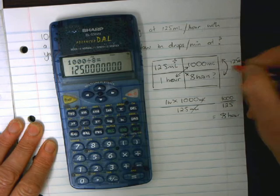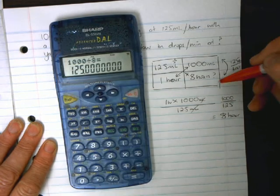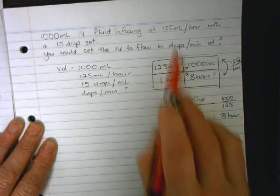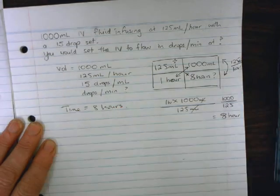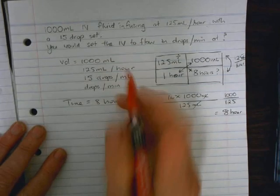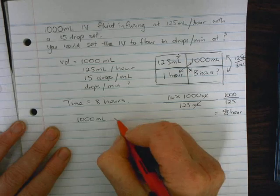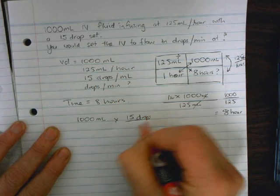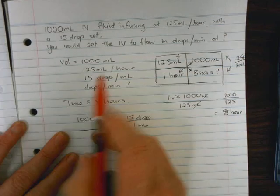So we've got a constant proportional ratio happening here. It's 125 mL per hour, so 1000 mL per 8 hours is the same. We know now that our time for this problem is 8 hours. Now we can complete the problem like we normally do. We take our total volume, multiply it by the giving set, so 15 drops per 1 mL.